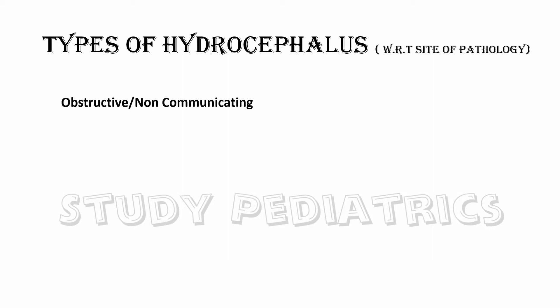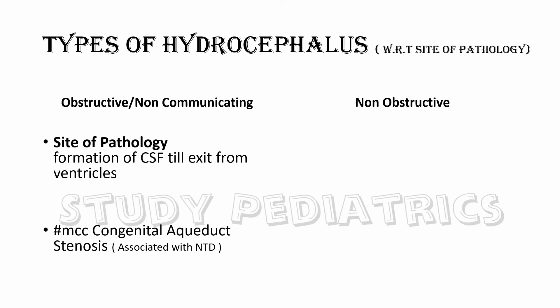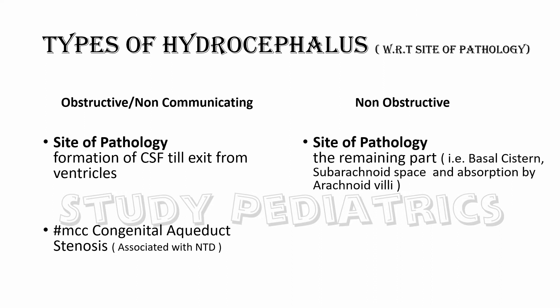The types of hydrocephalus are classified with respect to the site of pathology. The first type is obstructive or non-communicating, and the second type is non-obstructive. In the obstructive type, the site of pathology is from the formation of CSF up to the exit from the ventricles, with the most common cause being congenital aqueduct stenosis, which may be associated with neural tube defects.